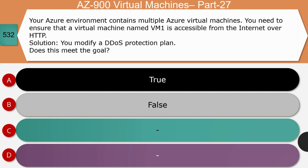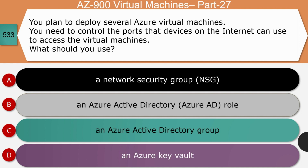Question 12: Your Azure environment contains multiple VMs. You need to ensure that VM1 is accessible from the internet over HTTP. The suggested solution is to modify the DDoS protection plan. Does this meet the goal? The right answer is false. DDoS is a form of network attack; the DDoS protection plan protects against DDoS attacks but does not provide connectivity to a VM. To allow HTTP access, you need to add a rule to a network security group or Azure Firewall to allow connections on port 80.